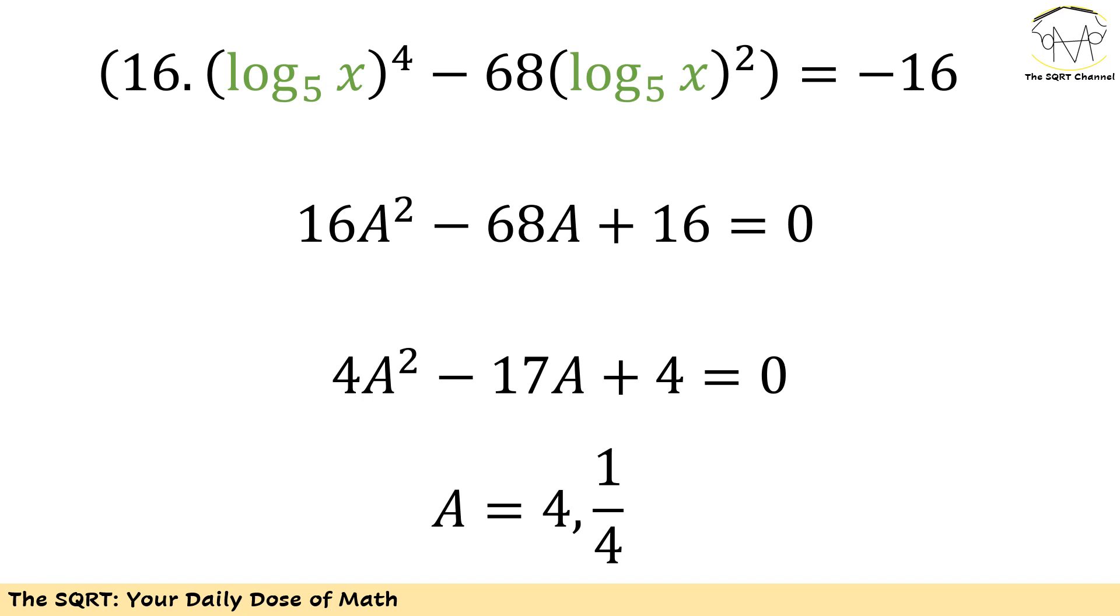Now let's use A for (log_5 x)^2. So I can rewrite it as 16A^2 - 68A + 16 = 0. If we divide everything by 4, we are going to end up with 4A^2 - 17A + 4 = 0. This is a quadratic equation that you can simplify and solve. You're going to end up with A can be 4 or 1/4.